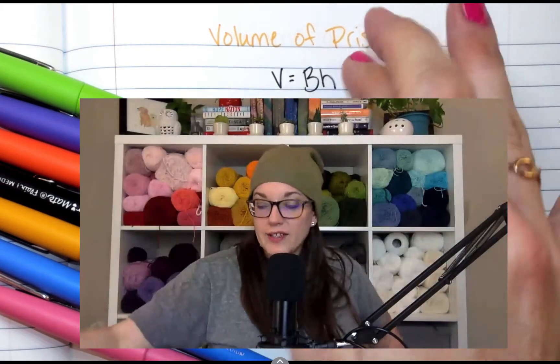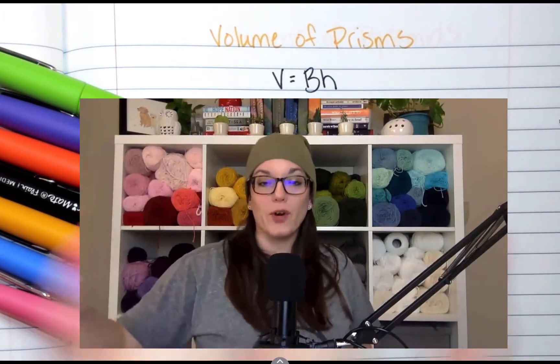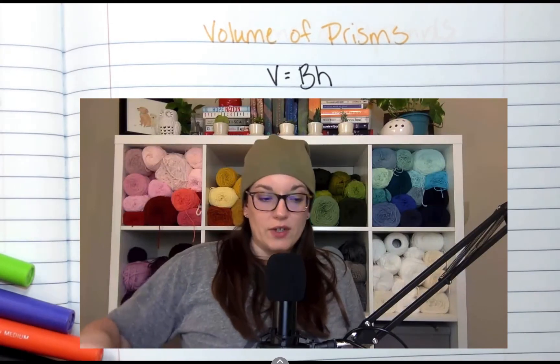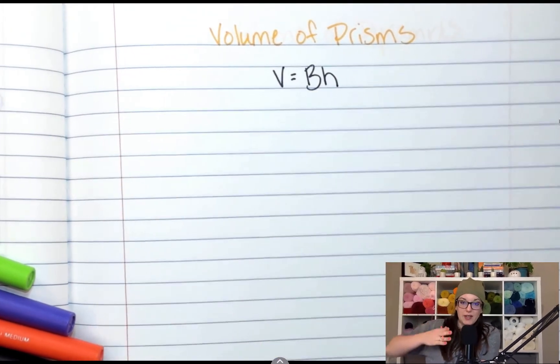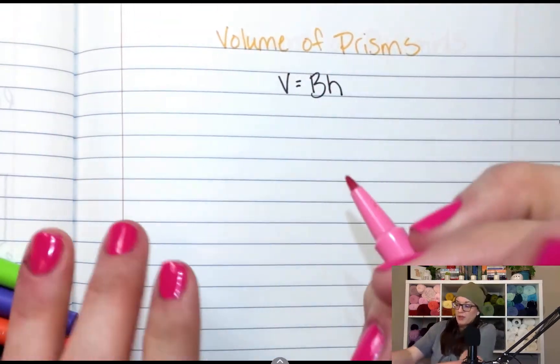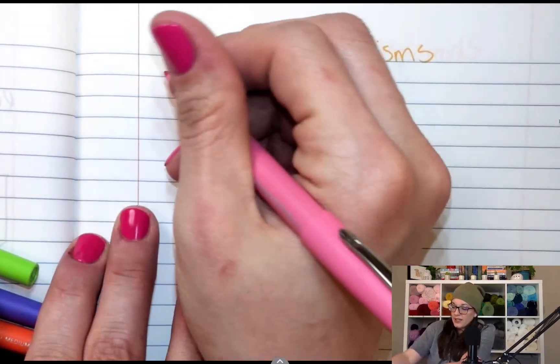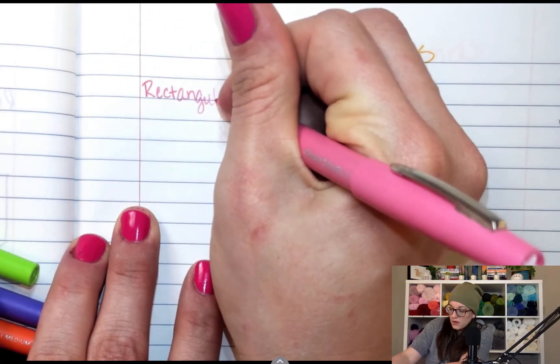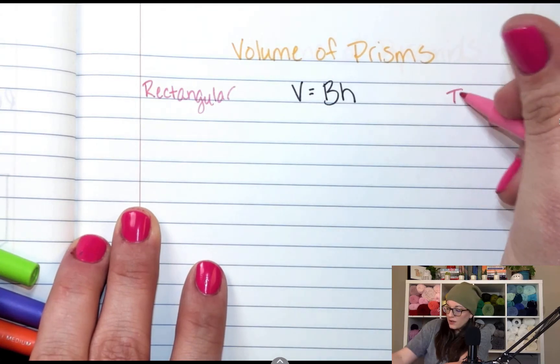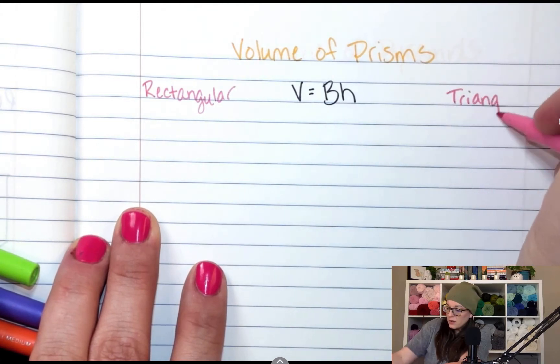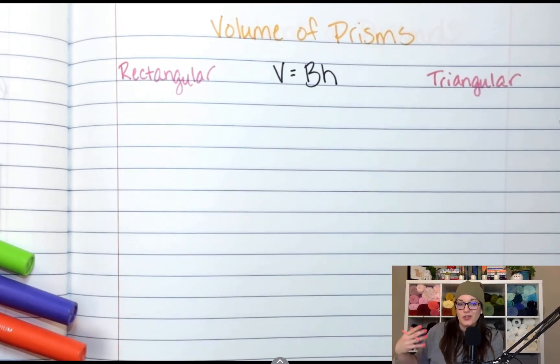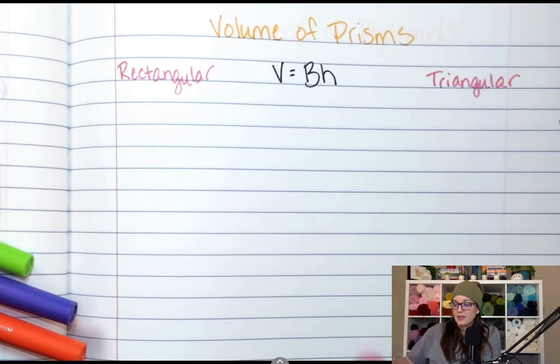All right, here's the formula for prisms, all prisms. No matter what kind of prism, this is the formula. Now let's look at our two kinds of prisms. We have rectangular and triangular, so I'm going to split them, and we're going to do rectangular over here and triangular over here. Because again, we use the same formula, the same process, it's just finding the area of the base is going to be different.